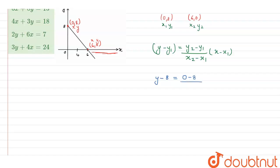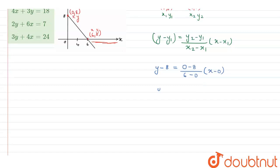upon x2 that is 6 minus x1 that is 0, and here x minus x1 that is 0. y minus 8 is equal to minus 8 upon 6 into x minus 0.